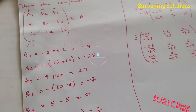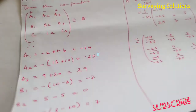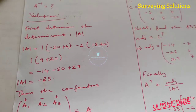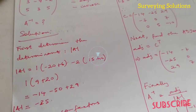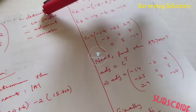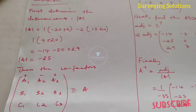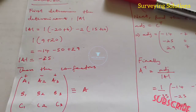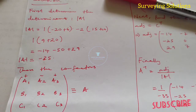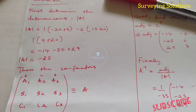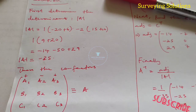We believe with this explanation we've broken every myth around getting the determinant and the inverse of a matrix. Remember the stages: get the determinant, get the cofactors, get the adjoint, and finally get the inverse. Thanks for coming to class — we'll show you how to do this on your calculator and on Microsoft Excel, so stick around. Keep being good surveyors, geomatic engineers, and mathematicians — we'll see you on the next video. Bye!